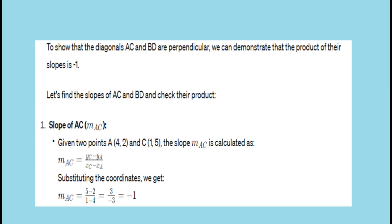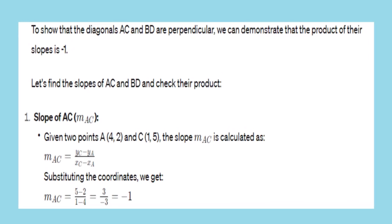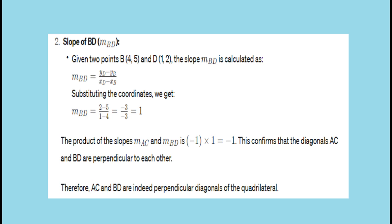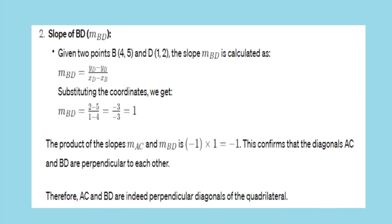Slope of AC: A(4,2), C(1,5). Slope AC = (y_C − y_A)/(x_C − x_A) = (5−2)/(1−4) = 3/(−3) = −1. Slope of BD: (2−5)/(1−4) = −3/−3 = 1. The product of slopes AC and BD is (−1) × 1 = −1, confirming that AC and BD are perpendicular. Therefore, AC and BD have the same midpoint and their diagonals are perpendicular to each other.